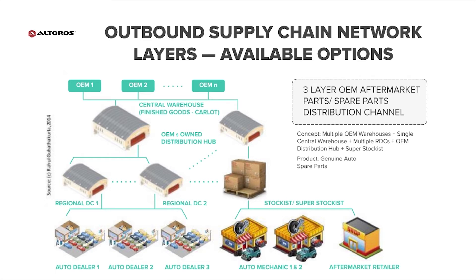In our illustration, we have a hypothetical supply chain for automotive parts. This chain might have a network of original equipment manufacturers, typically known as OEMs, a network of distributors at both regional and local levels, and then end buyers of these parts might be split up between dealerships, mechanics, and parts retailers. So even in a rather simplified scenario, we see the number of participants involved add up very quickly.